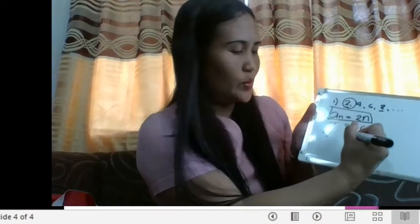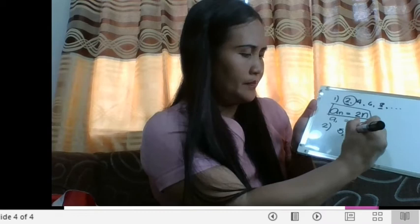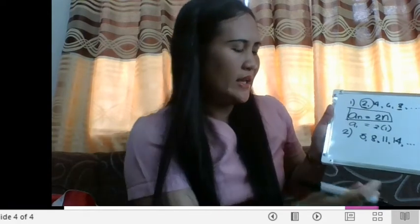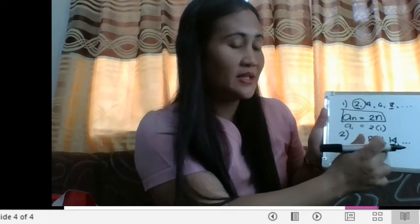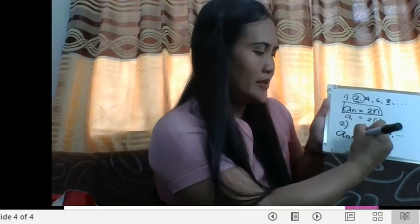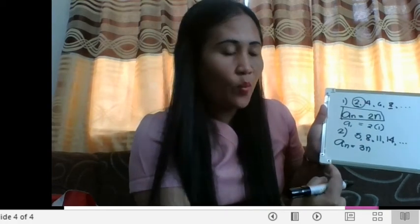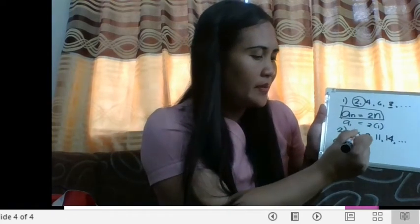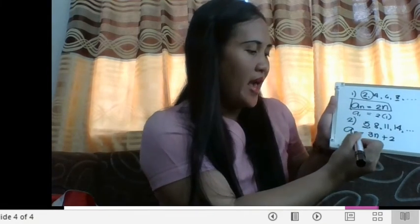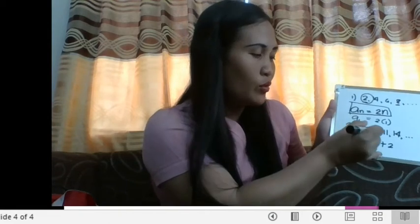For another example, consider the sequence 5, 8, 11, 14. What is the fixed number being added? 5 plus 3 is 8, plus 3 is 11, plus 3 is 14 — we are adding 3. So we start with a sub n equal to 3n. But a sub 1 equals 3 times 1, which is 3, and our first term is 5, so we need to add 2. Therefore, a sub n is equal to 3n plus 2.